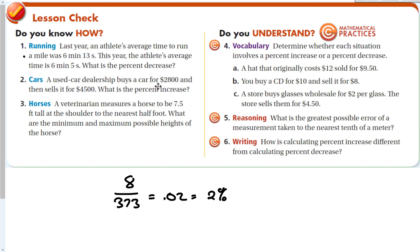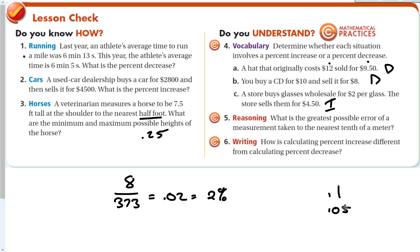A used car dealership buys a car for $2,800 and sells it for $4,500. Find the difference and divide by the original price of $2,800 — always divide by the original price. A veterinarian measures a horse to be 7.5 feet tall to the nearest half foot, so the measurement could range from 7.25 to 7.75 feet. Determining percent increase or decrease: 10 to 8 is a decrease; store buying glasses at $2 and selling higher is an increase.